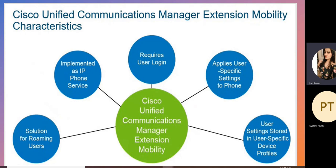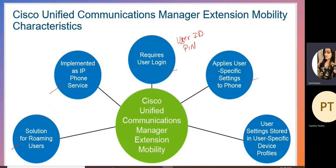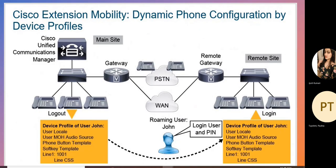If you have extension mobility enabled, what are its characteristics? Extension mobility gives the solution for roaming users. It is implemented as an IP phone service and requires user login — using a user ID and PIN. It applies user-specific settings to the phone, and user settings are stored in a user-specific device profile. Extension mobility enables dynamic phone configuration by device profile as we move to another device.